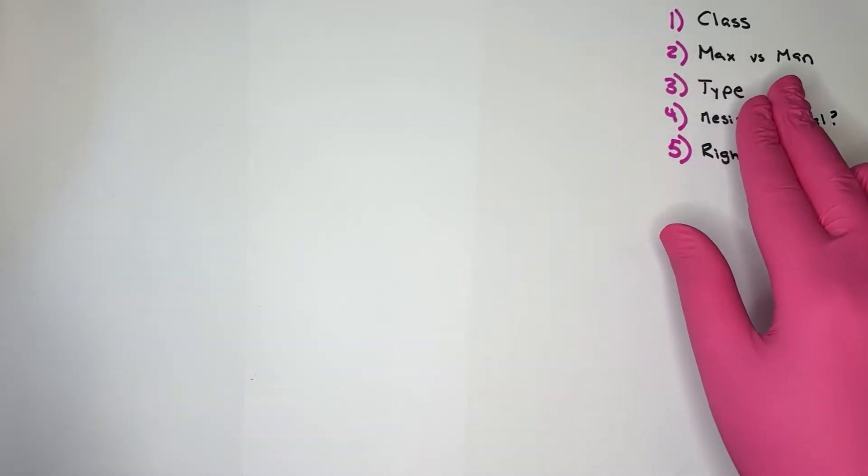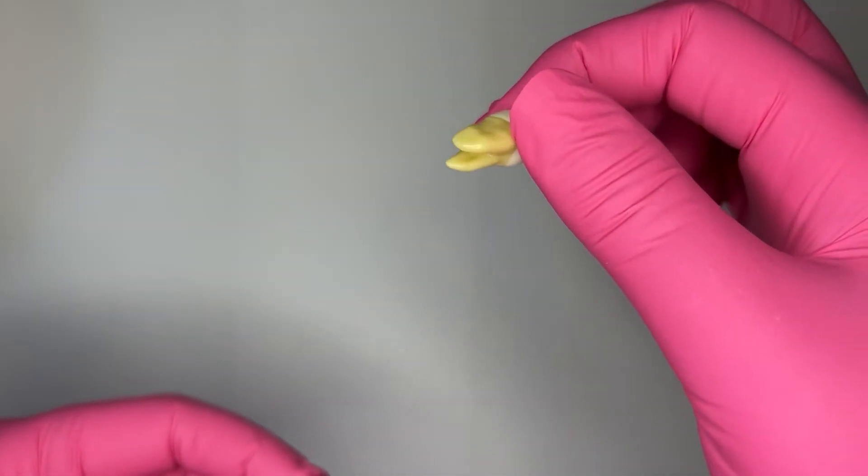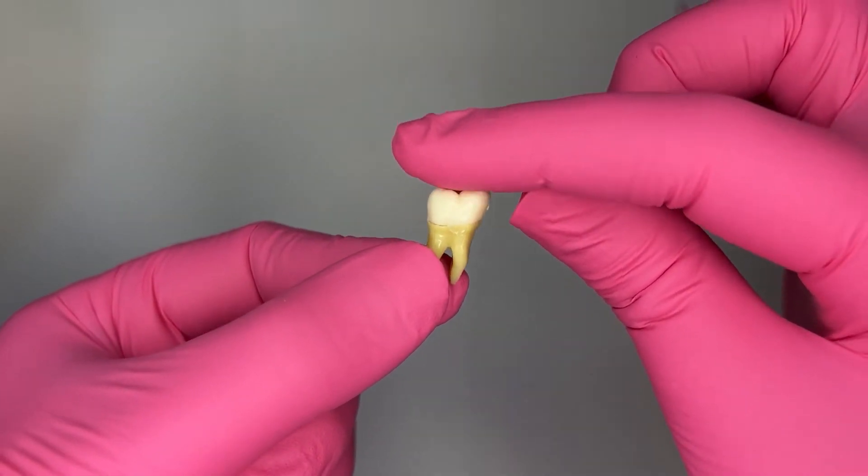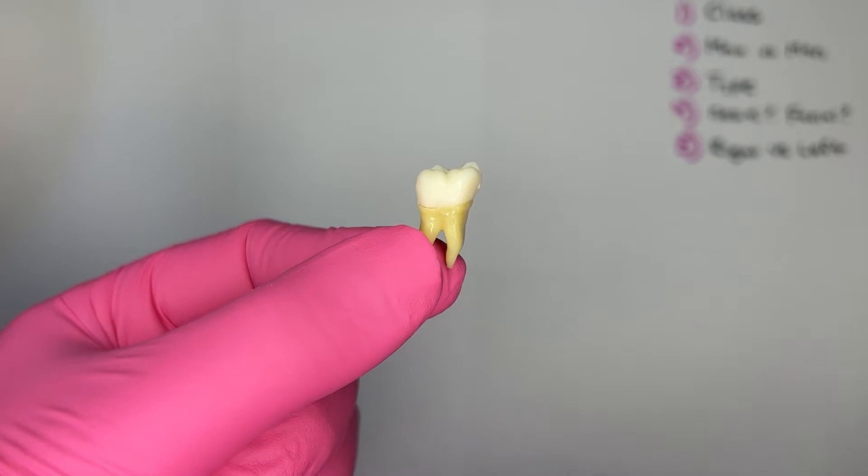Step two, is it a maxillary or mandibular molar? Let's look at the number of roots. There's two, so I know this is a mandibular molar. If there were three roots, it would be maxillary. Two roots, mandibular molar.